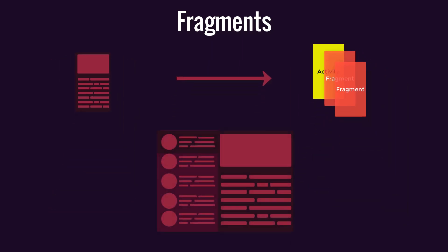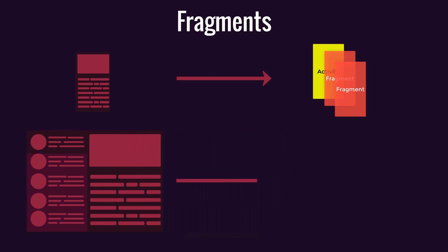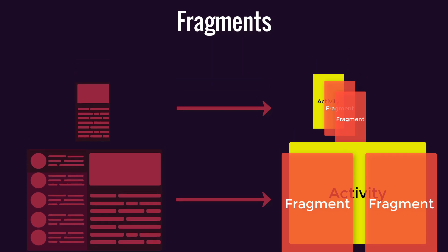On a tablet device where more screen space is available, we can dynamically change the UI. As the anatomy shows, it's an activity that hosts two fragments: one showing the recent news headings and the other showing the details of the clicked news.